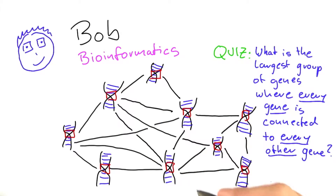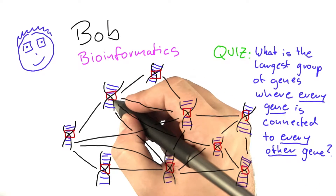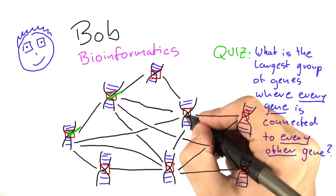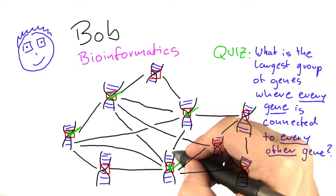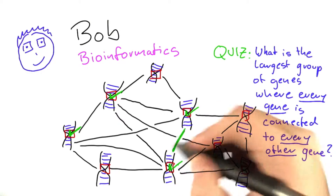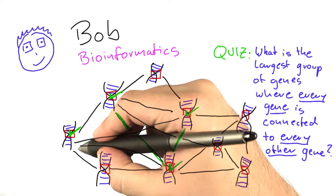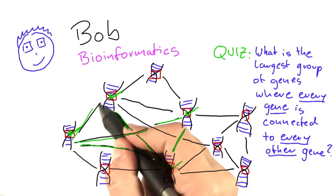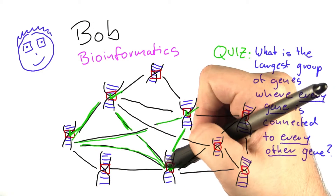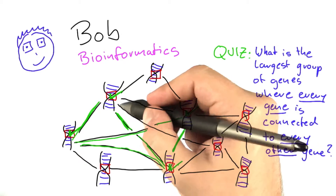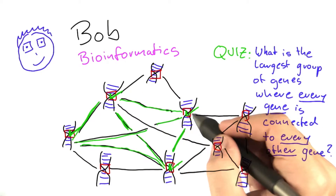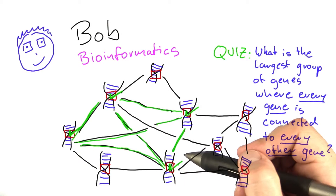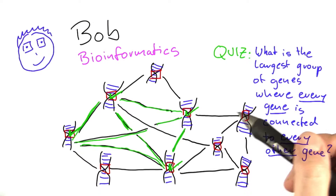We can find a group of four genes that are connected to each other by selecting this one here, this one here, this one here, and this one here. This gene here is connected to those three. This gene here is connected to that one, that one, and that one. This one up here is also connected to this one, this one, and this one. And similarly, the fourth one is also connected to the other three. So that is actually the largest possible group of genes that you can find that are all connected to each other in this network.